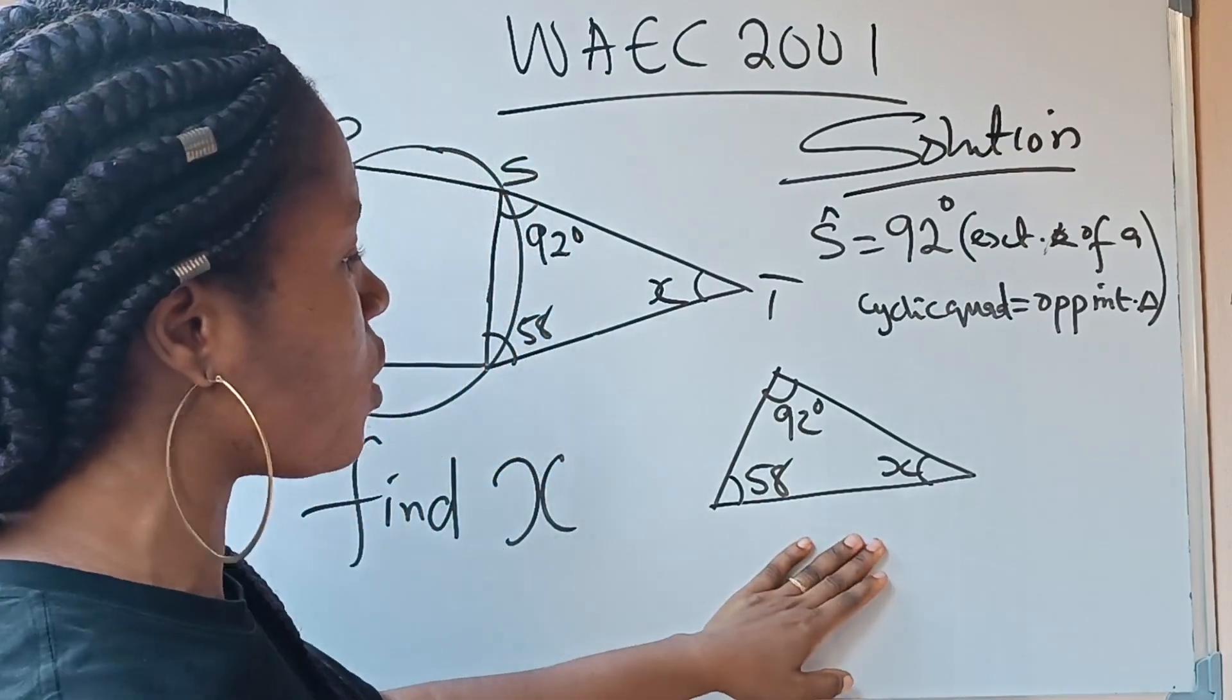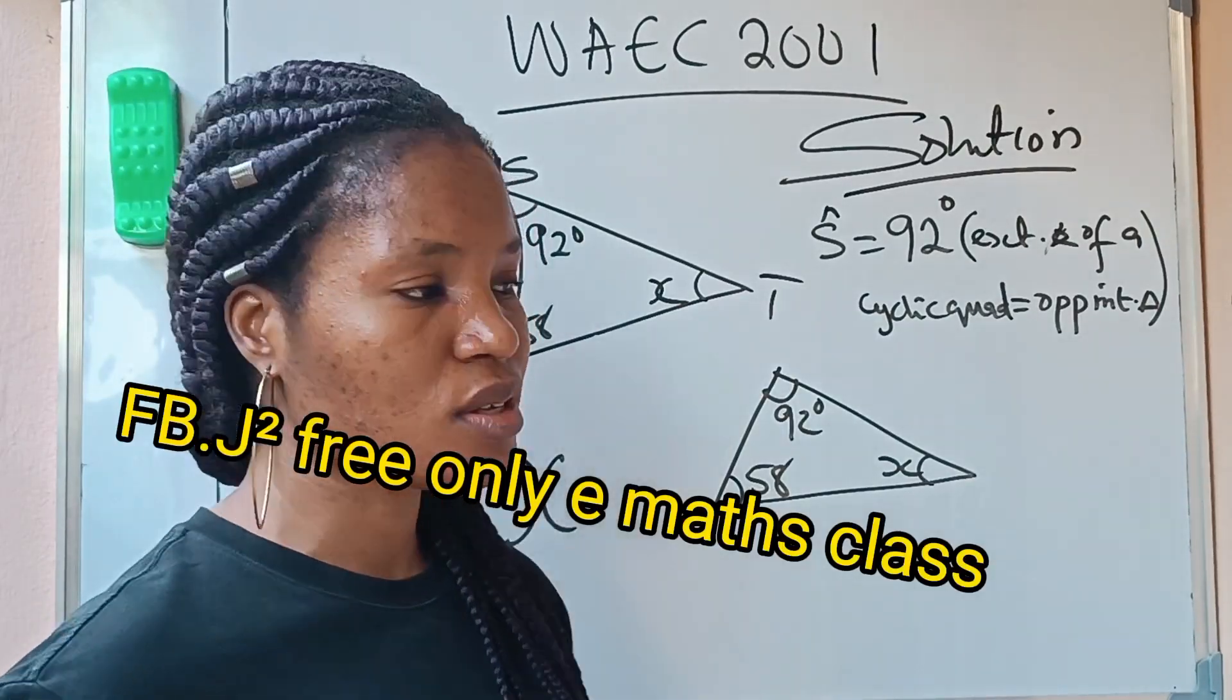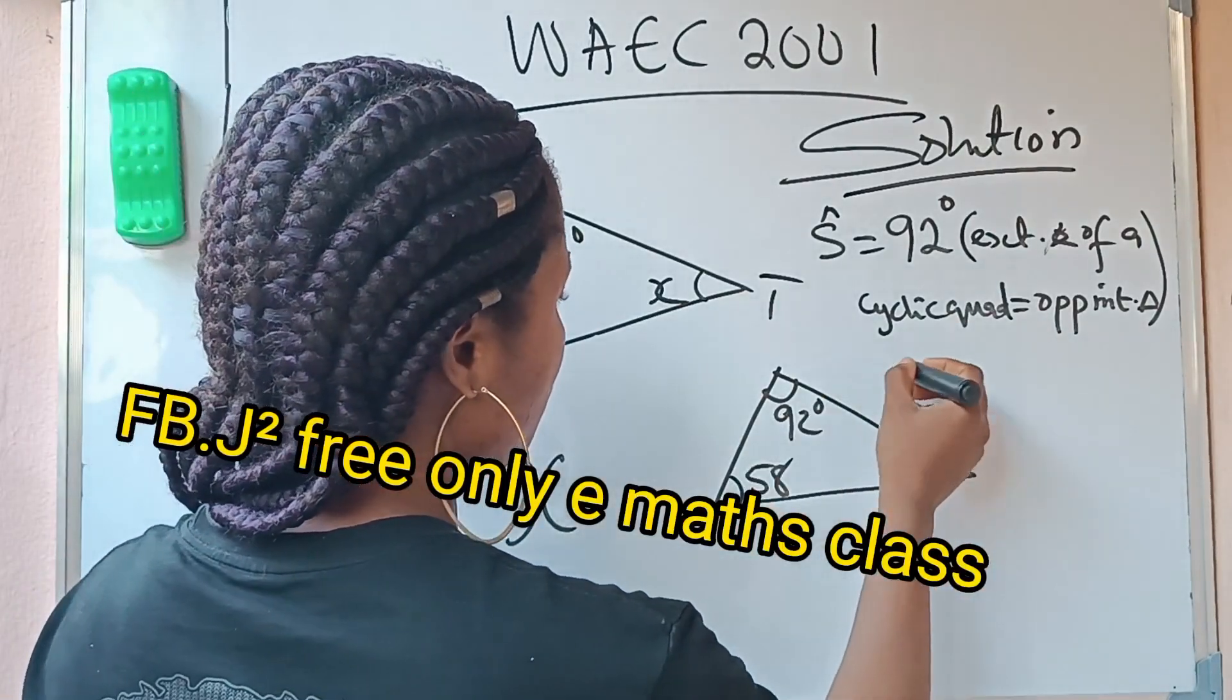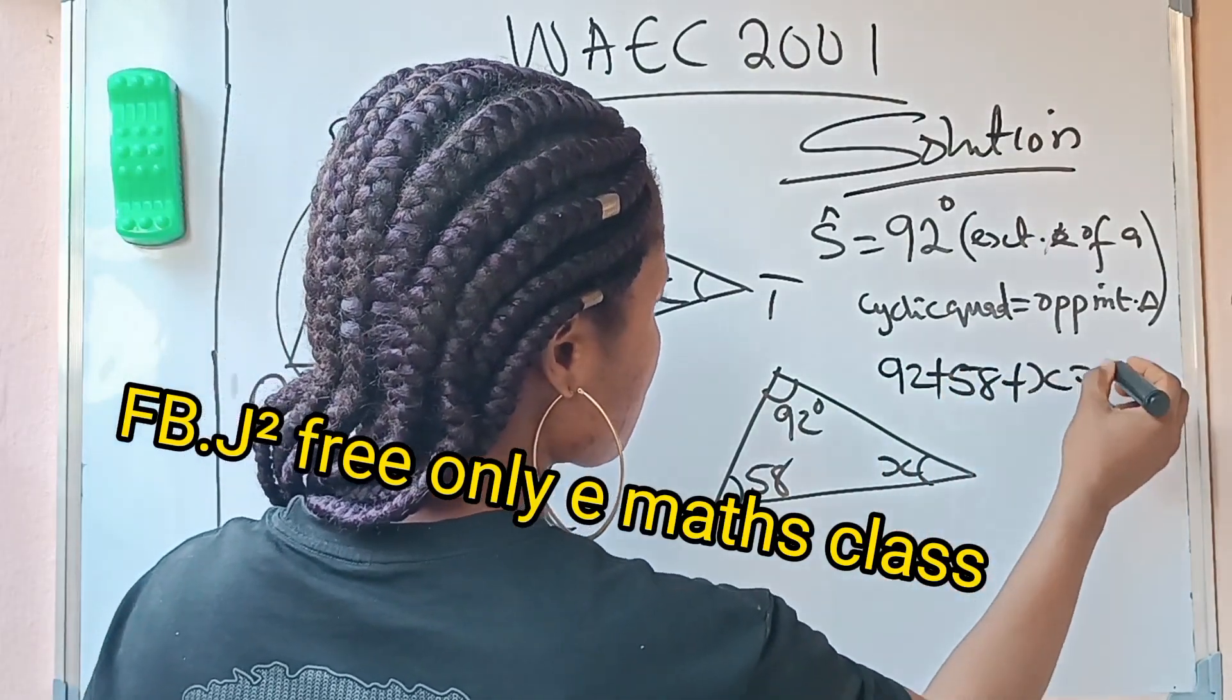Alright. So look at this. Now you know that the sum of angles in a triangle is supposed to give us 180 degrees. So it means that 92 plus 58 plus X is supposed to give us 180.